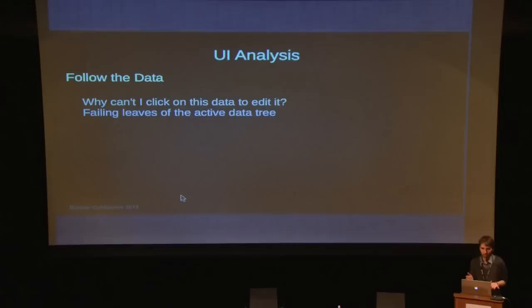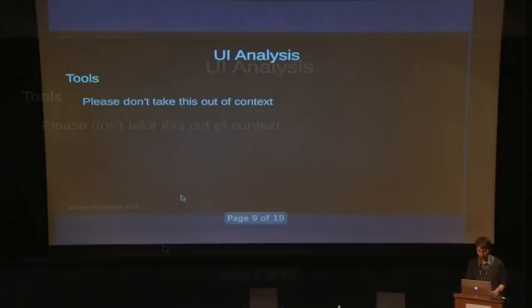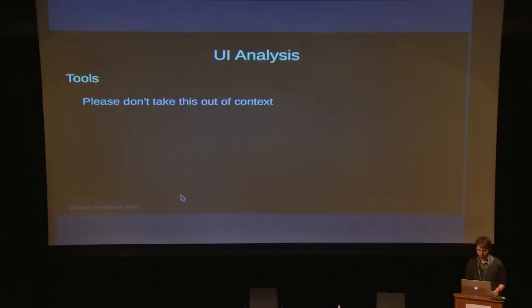Because we have this concept of always showing the active data in the properties editor instead of something you just clicked in the outliner, things can get very confusing. I think we should probably think about how we can clarify that. This is one of those things we never really discussed for 2.5 — how do you determine what gets shown in every editor? The animation editors also have their own idea about selection, which sort of syncs with other selection, and it's kind of confusing. We need a more consistent way to deal with this.